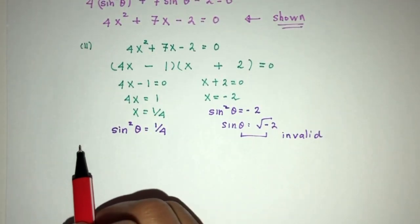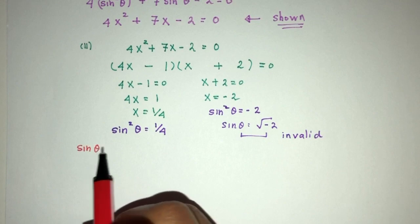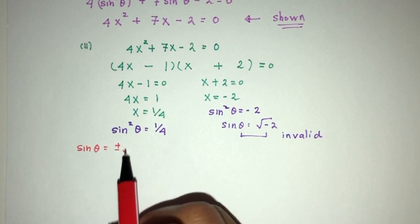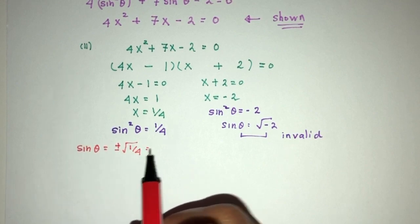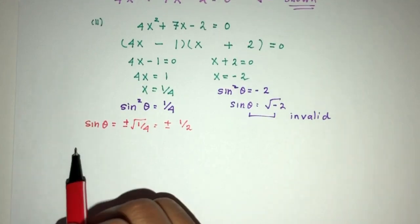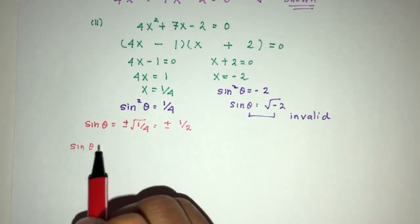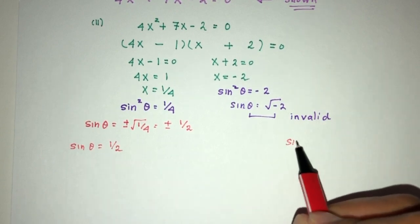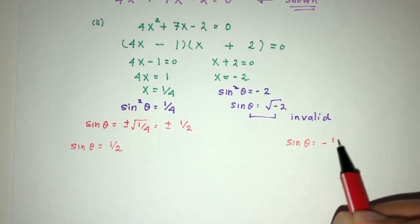So, we have to go on with only one side of the equation. So, this will give you what? So, we realize that sinθ will be plus minus root of 1/4, which is plus minus 1/2.